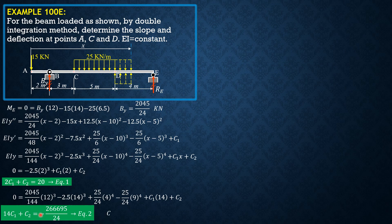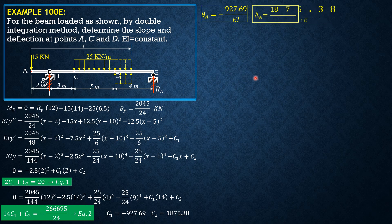Solving these two equations simultaneously gives us C sub 1 equals negative 927.69 and C sub 2 equals 1875.38. So divided by EI, theta A equals negative 927.69 over EI, and delta A equals 1875.38 over EI.